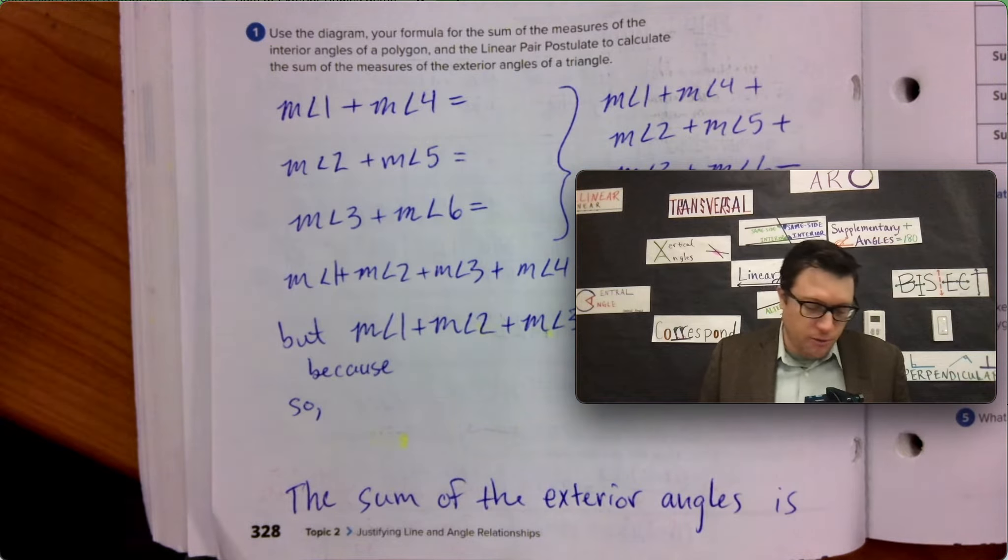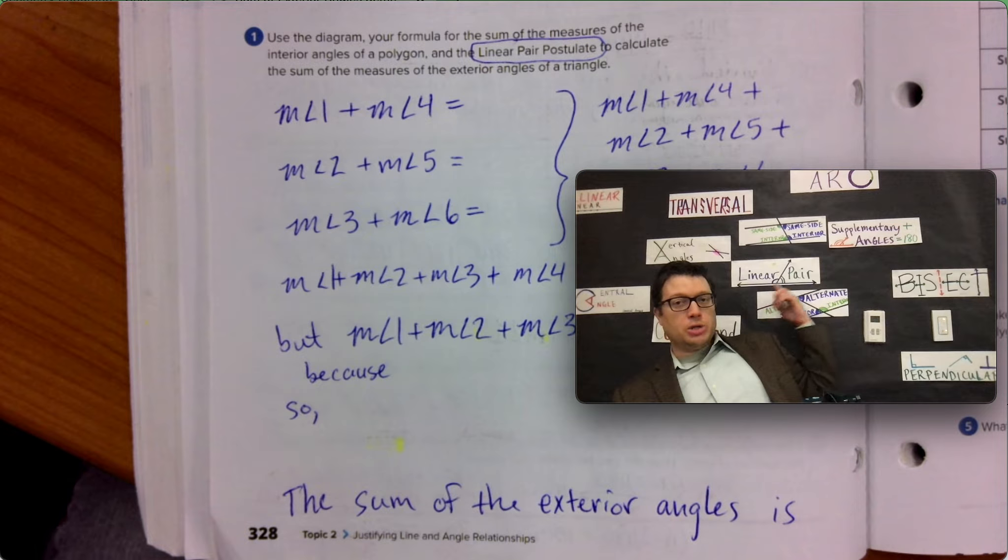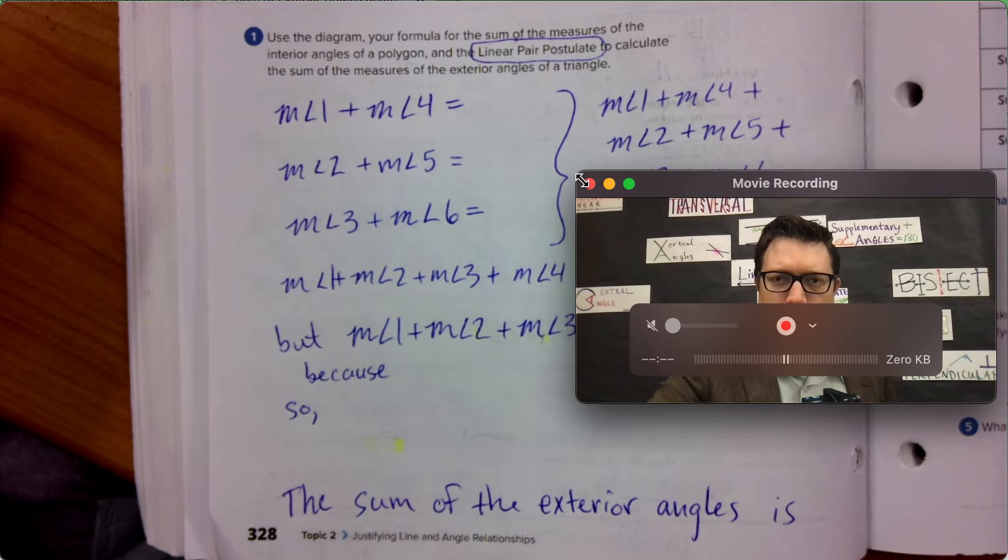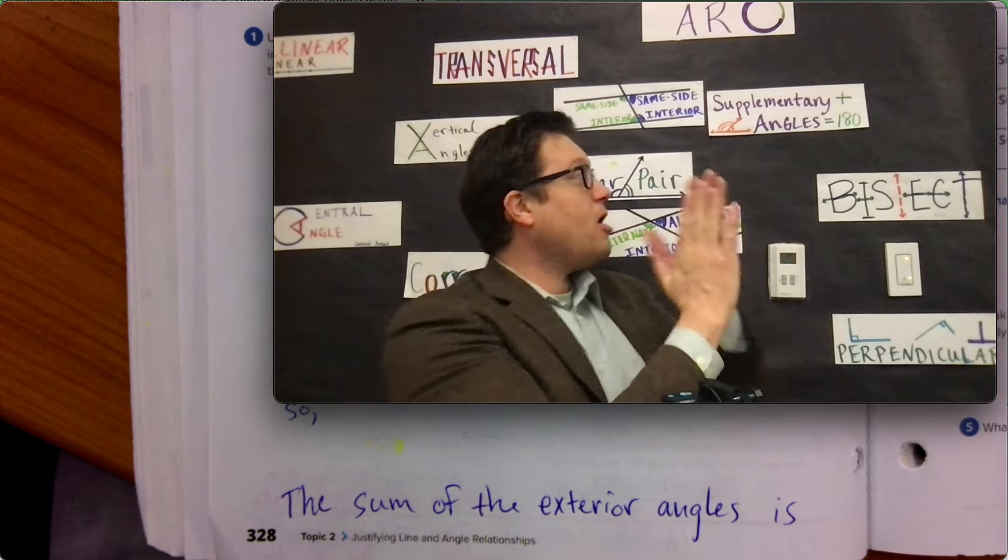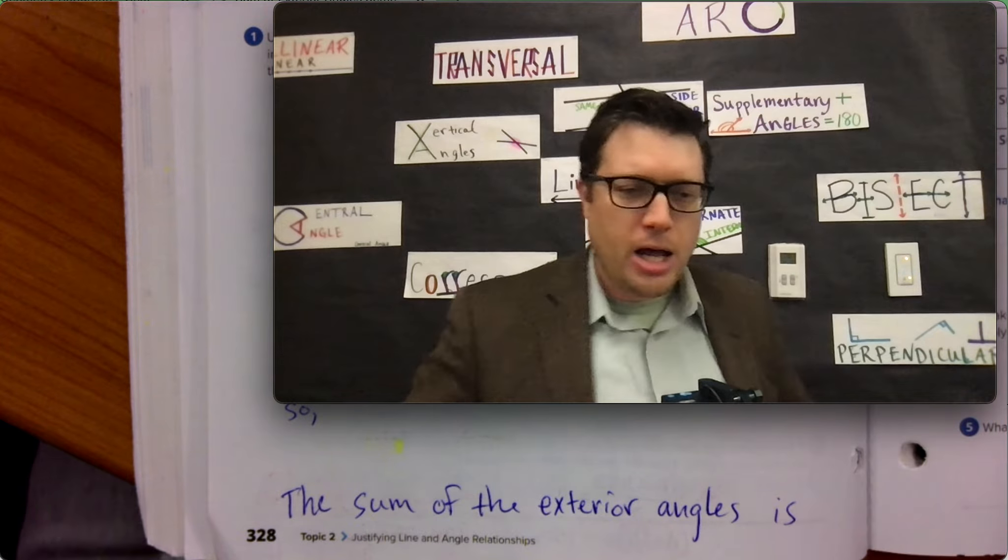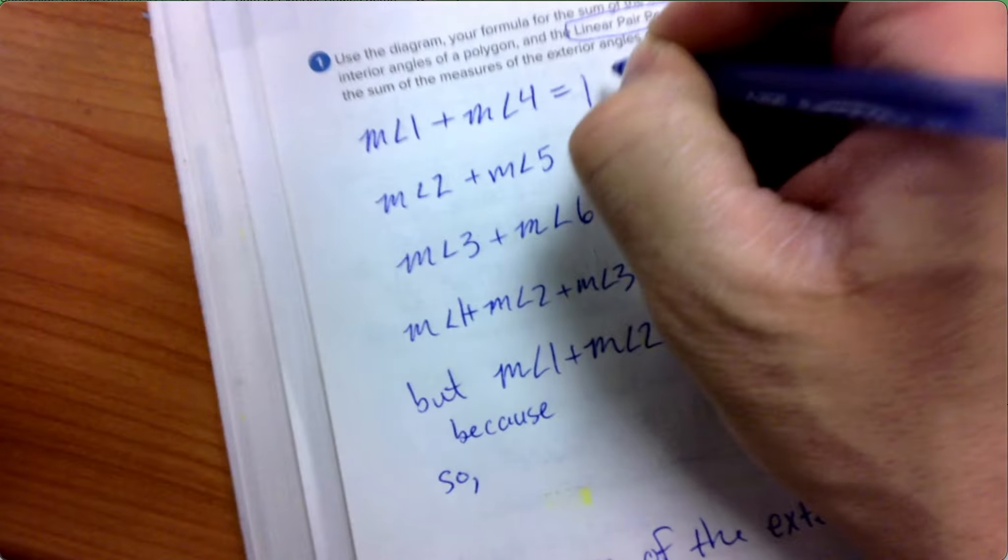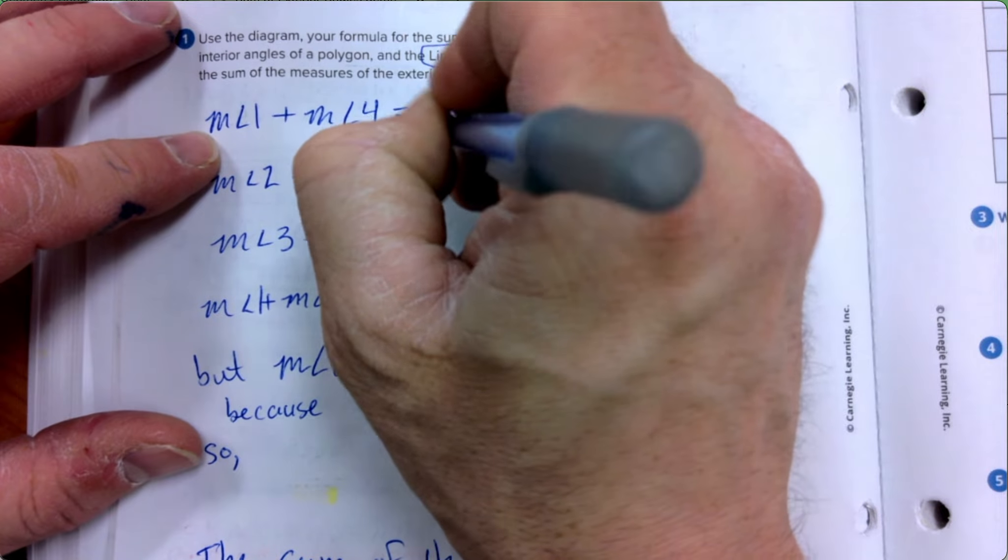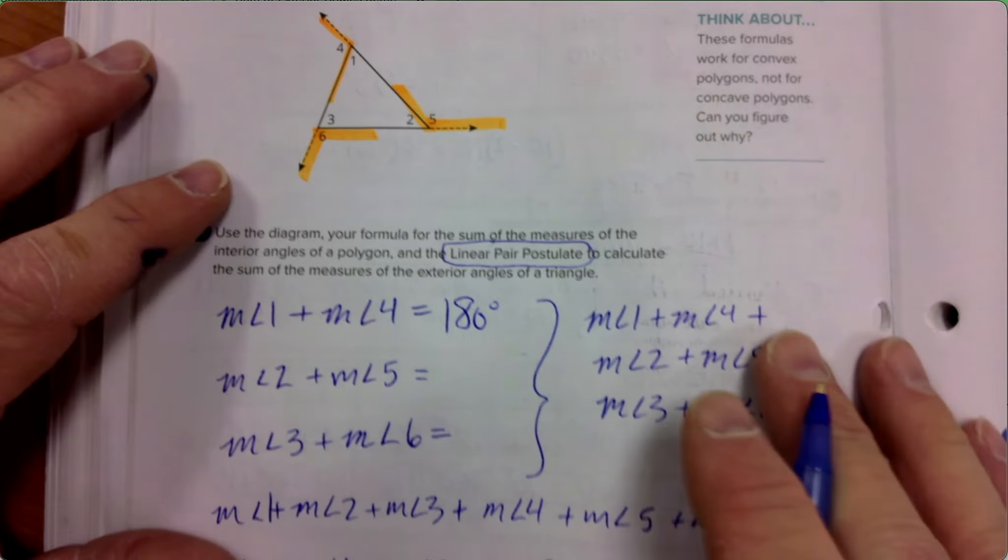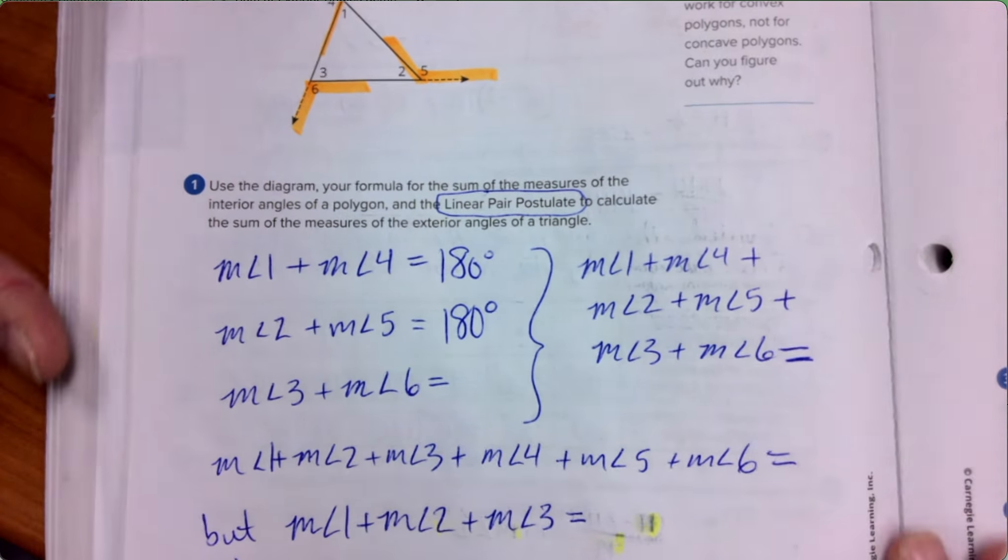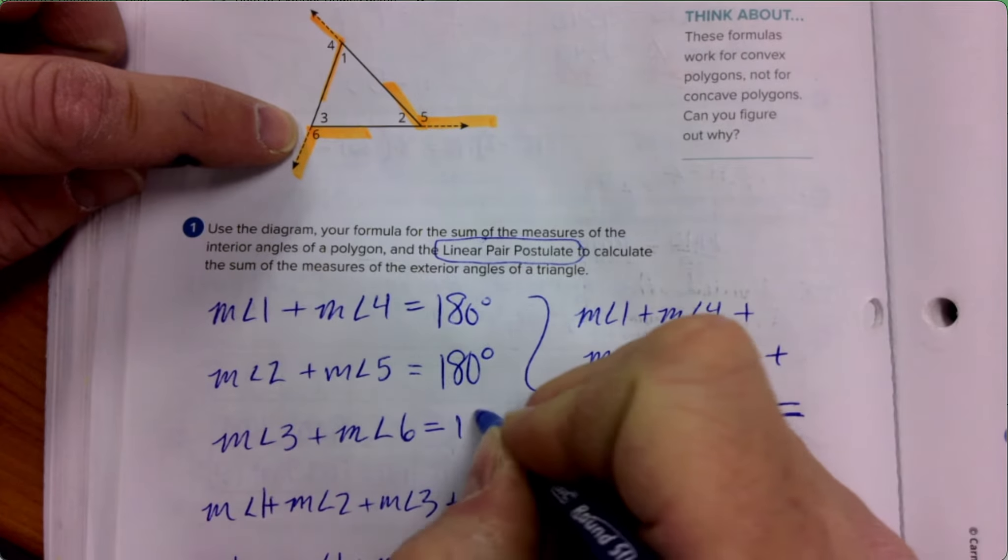So the measure of angle one plus the measure of angle four, because of the linear pair postulate, linear pairs are supplementary. Linear pairs look like this. I need to make my screen bigger so you're not squinting or zooming in. Linear pairs look like this - it's an angle plus an angle. And when they make a straight line, they are in fact supplementary. They in fact add to 180. That is our first blank space in the text that you copied down on page 328. 180. It turns out measure of angle two plus the measure of angle five also forms a linear pair, so it has to equal 180. And then the measure of angle three plus the measure of angle six is the same, also 180.